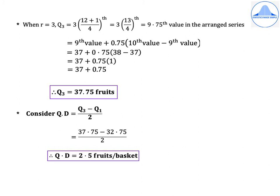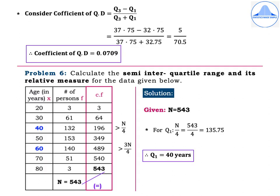Quartile deviation = (Q3 − Q1) / 2 = (37.75 − 32.75) / 2, so quartile deviation = 2.5 fruits per basket. The coefficient of quartile deviation = (Q3 − Q1) / (Q3 + Q1) = (37.75 − 32.75) / (37.75 + 32.75) = 5 / 70.5. Therefore the coefficient of quartile deviation is 0.0709.